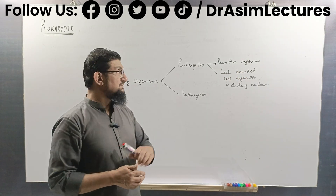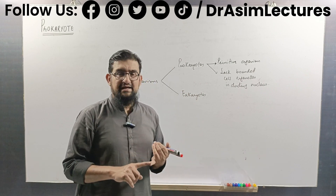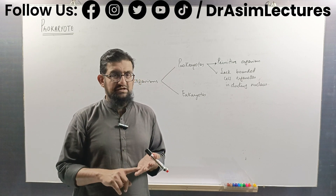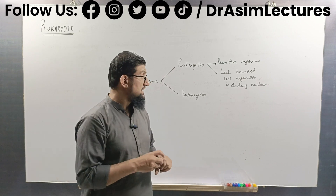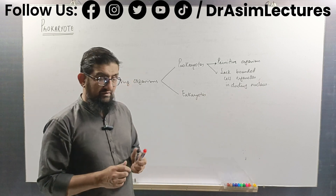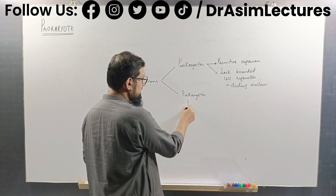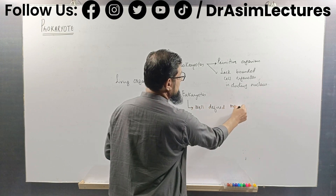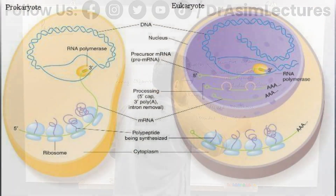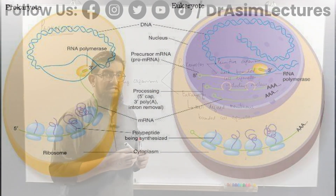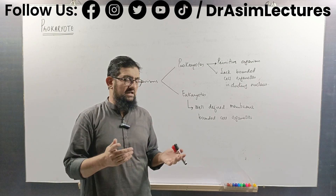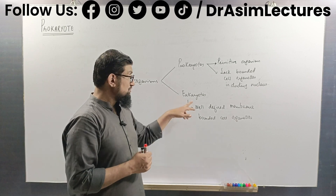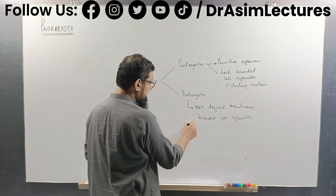All prokaryotic living organisms lack membrane-bounded cell organelles like endoplasmic reticulum, Golgi bodies, mitochondria, chloroplasts, and other plastids. They also lack a nucleus. In contrast, eukaryotes are organisms with well-defined membrane-bounded cell organelles — eukaryotic cells contain endoplasmic reticulum, mitochondria, Golgi bodies, and more. Eukaryotes also have a well-defined nucleus.